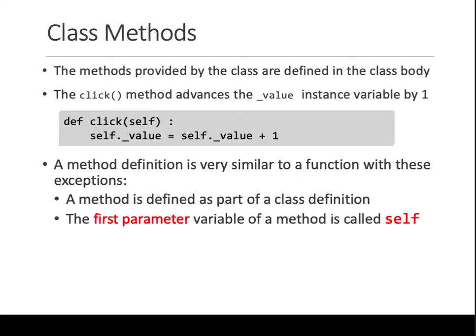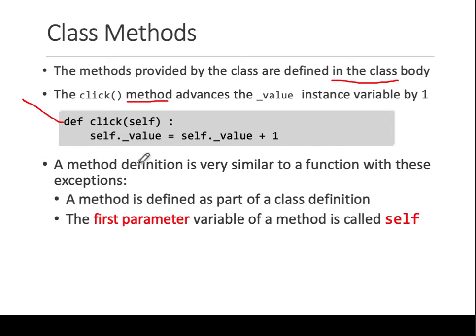How do you create methods of a given class? They are defined inside the class body. First you define a class, and inside it you define the methods that belong to that class. The method or function is defined in the same way as we have seen before — with the def keyword, a colon, a tab, and so on.